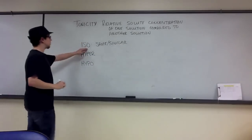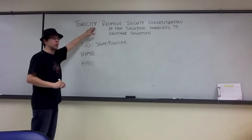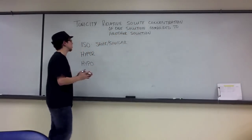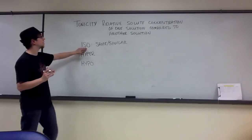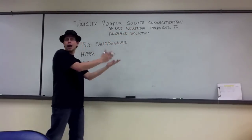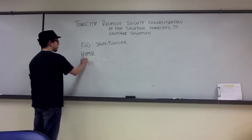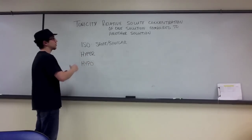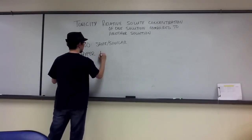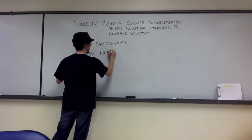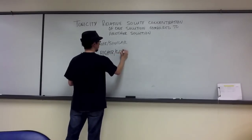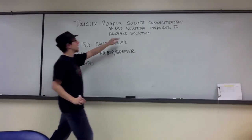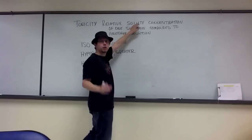The thing you need to always know about the prefix iso is it means the same or similar. These prefixes come before the word tonicity or tonic, and we're comparing solute concentrations between solutions. So an isotonic solution has the same relative solute concentration as another solution. Hyper — if you think of a kid who is hyperactive, they have too much energy. Hyper means greater than, higher, or in excess.